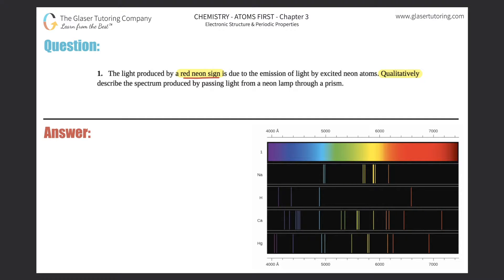Now over here, I have a light spectra of many different elements. I have sodium here, hydrogen, calcium, and mercury. And all elements will have their own specific light spectra.